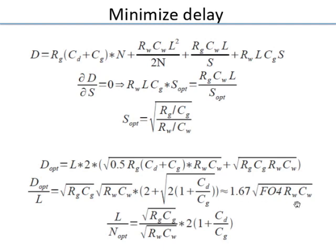The technology-dependent part (Rg·CG and related terms) is fixed by the process. The wire-dependent part (Rw·Cw) varies by metal layer and wire width. Making wires wider reduces Rw but slightly increases Cw. Using higher metal layers reduces resistance due to greater thickness. So D(L) and L/n_opt depend on both the technology and the specific wire geometry used.